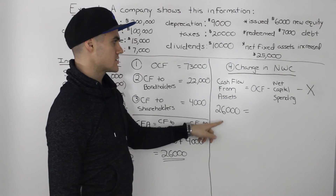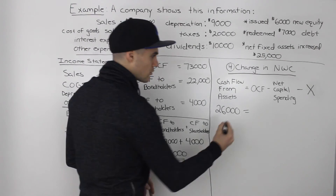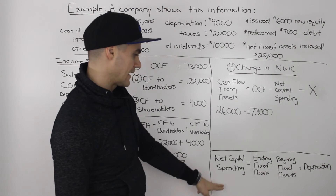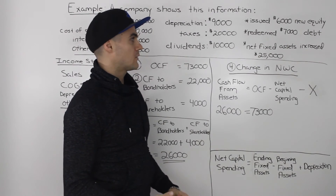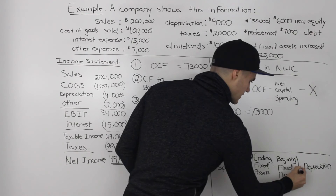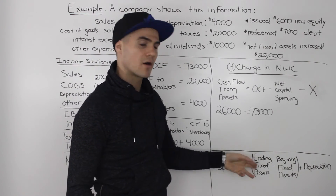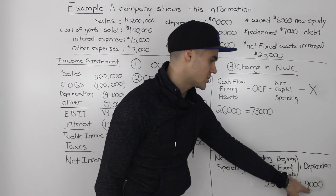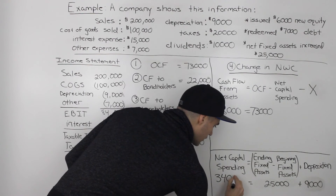Operating cash flow we already solved: that's $73,000. For net capital spending, the formula is: ending fixed assets minus beginning fixed assets plus depreciation. We're told net fixed assets increased by $25,000, so that bracket is positive $25,000. Adding depreciation of $9,000 from the income statement gives net capital spending of $34,000.